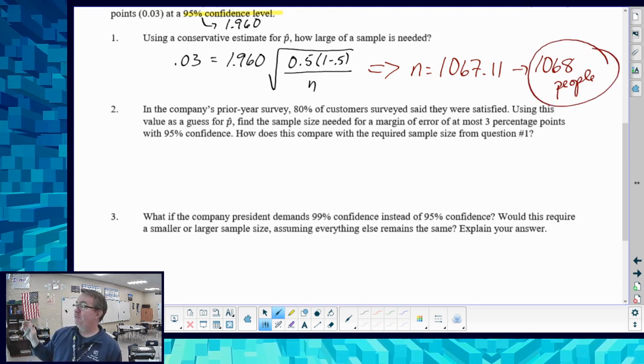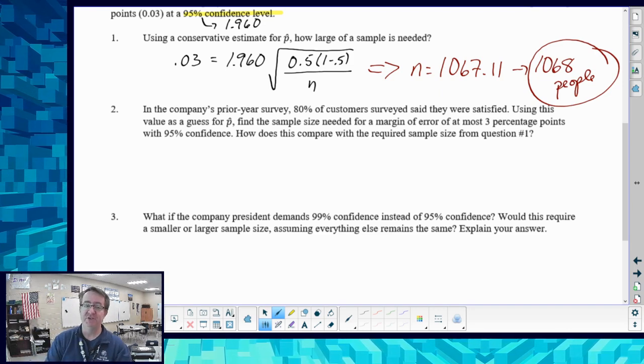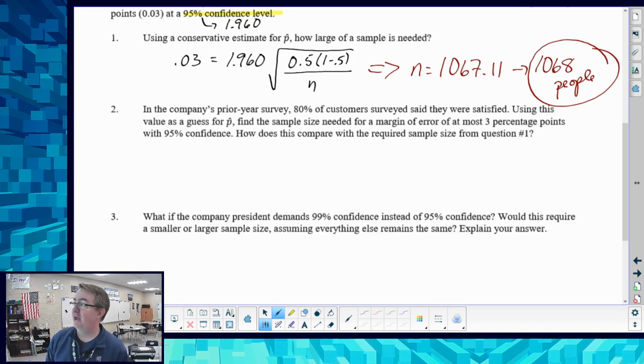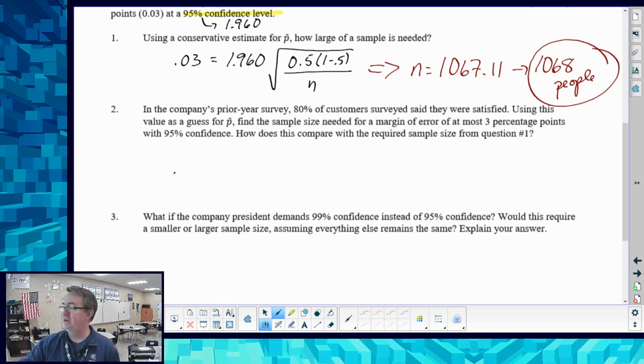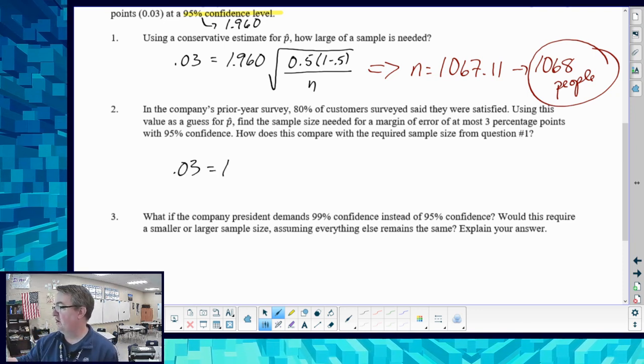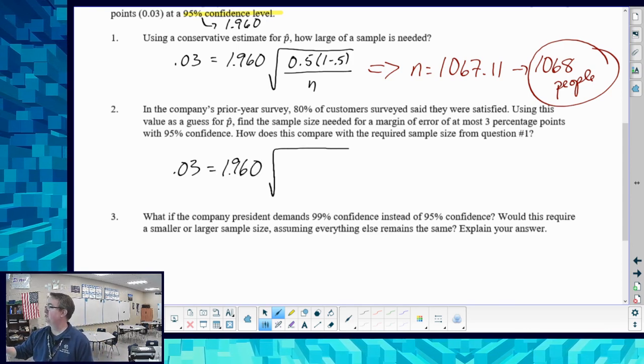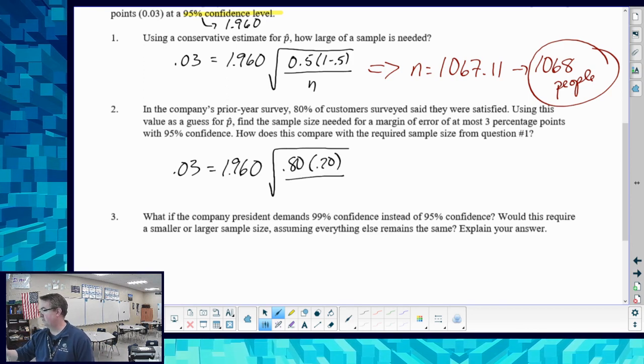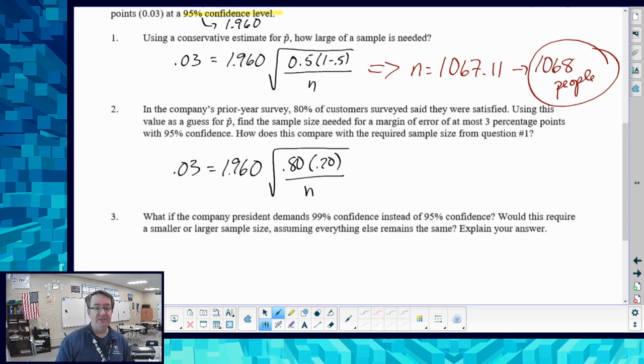Now, prior year survey, they found that 80% of the customers were satisfied with what was going on. So that would be an appropriate p hat value to have. We're going to go through the exact same math, the exact same way. The only difference is that we are going to change our p hat to become 80%, which means that our failure rate is going to be 20%. And again, we're going to solve for n.